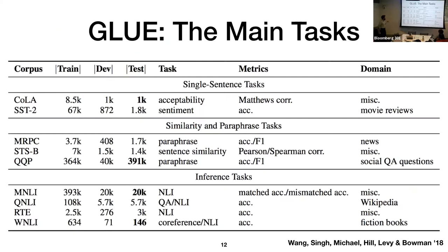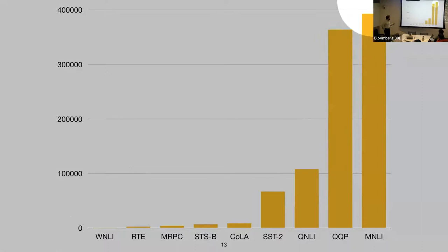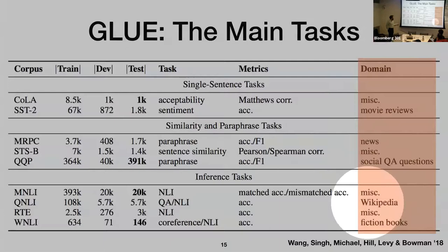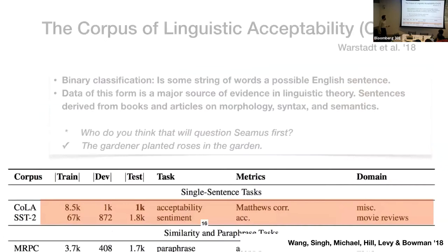Here is the set of tasks we chose. Looking at training set sizes, we have a nice range from about 500 at the low end to just under half a million at the high end. Looking at genre, we have movie reviews, social media, QA questions from Quora, Wikipedia, and a couple of miscellaneous multi-genre datasets that also contain transcribed spoken language, so we get some spoken genres as well.